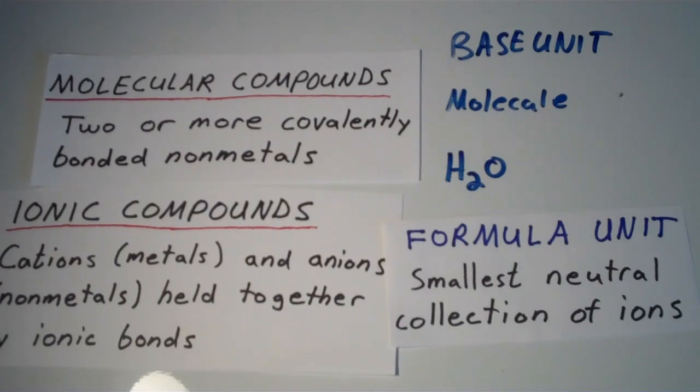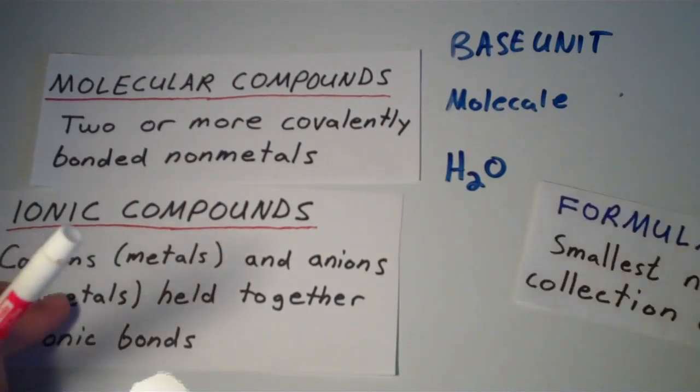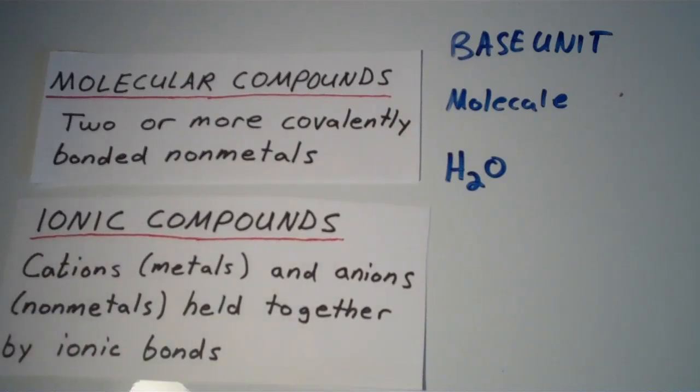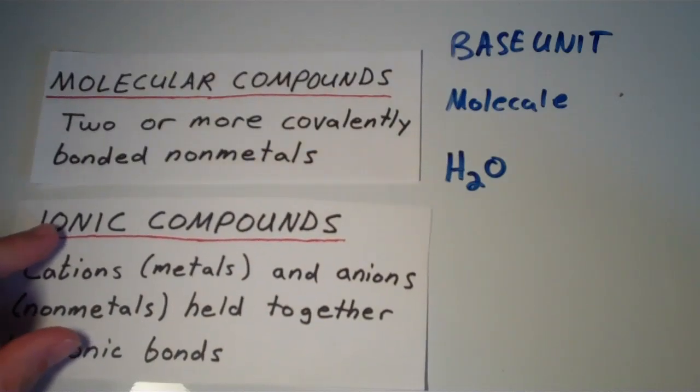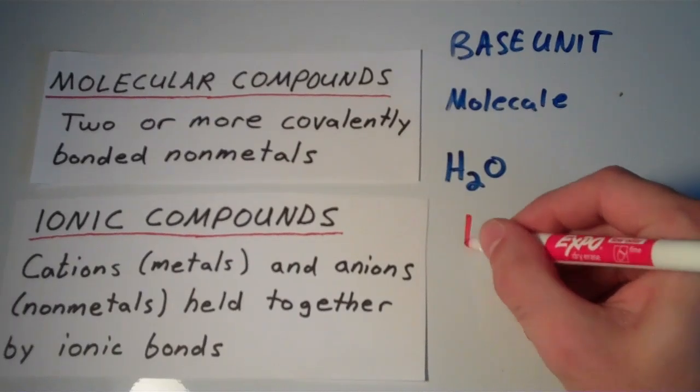And a formula unit is defined as the smallest neutral collection of ions. So the formula unit for sodium chloride, which is table salt, is NaCl.